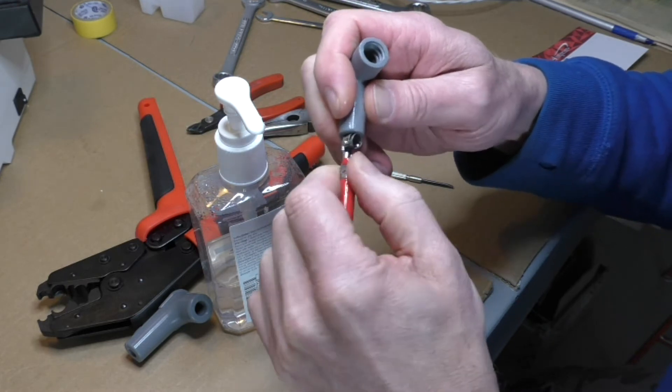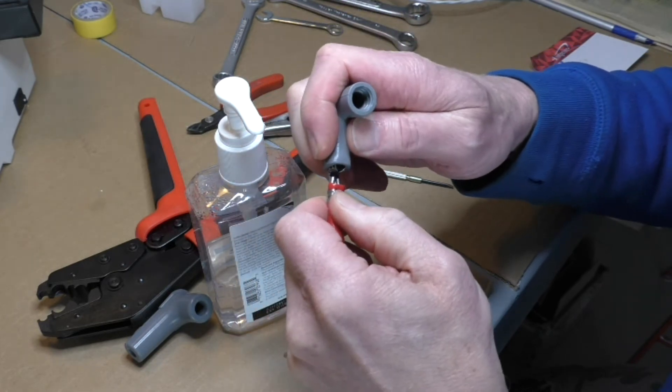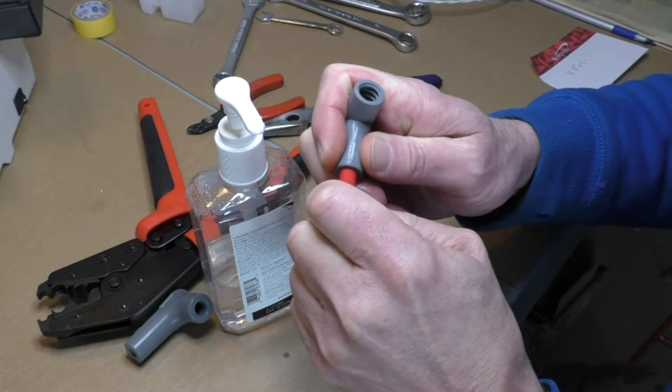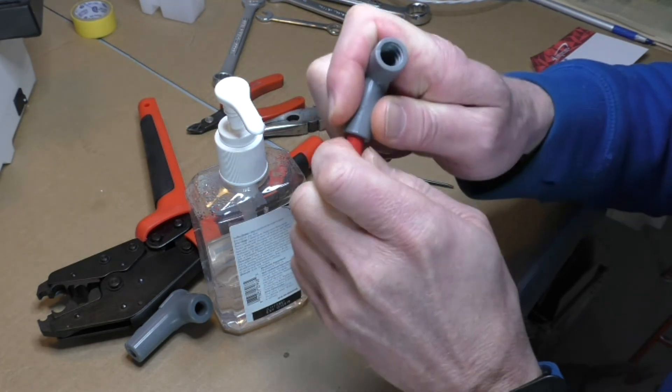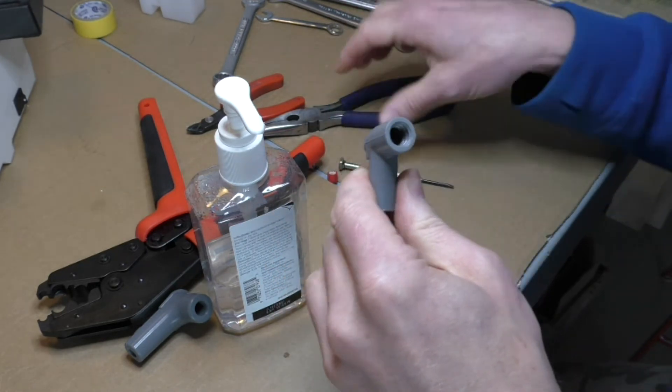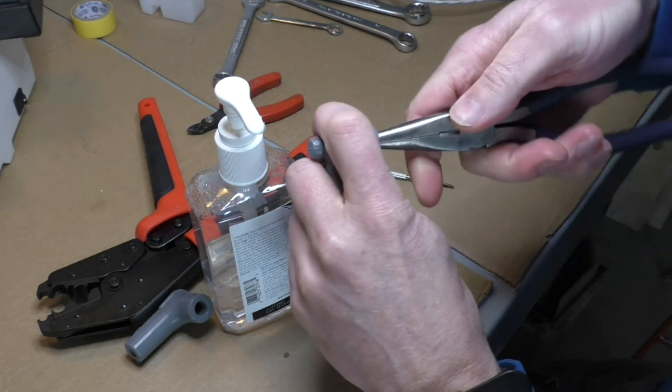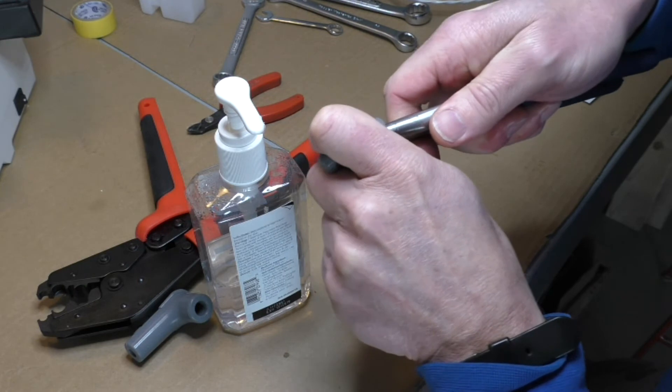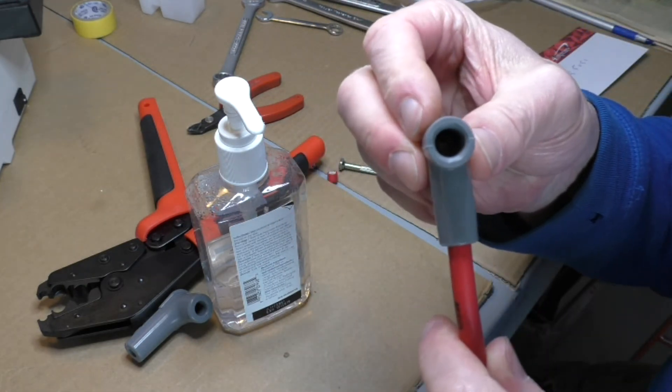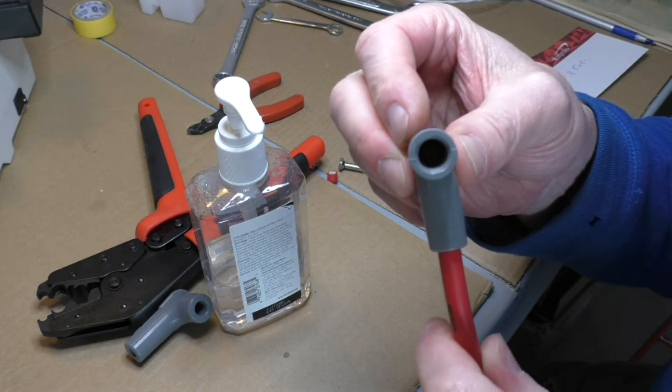So align the spark plug terminal opening with the boot opening here and push. Push it in all the way. And I usually like to put some pliers in here and just pull a little bit to make sure it gets right to the end. Hopefully you can see in there. The terminal is facing there nicely so the spark plug will go through the hole.